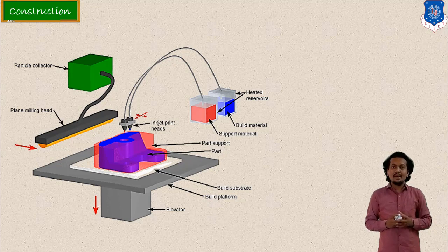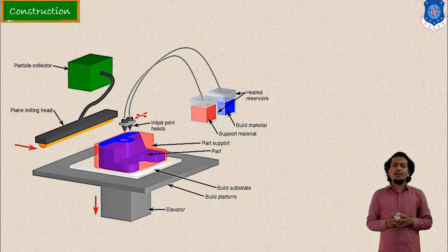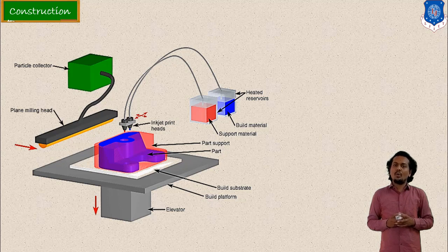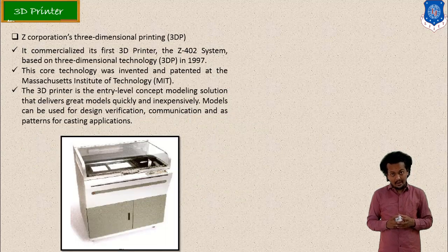Here two heads are available separately. In one head you can provide your build material in the form of liquid or solid pellets, and from another you can provide your support material, which is wax. A heating arrangement is required if you are putting your material in solid form. By depositing on the bed with XY movement and Z combination, you can build the whole model.